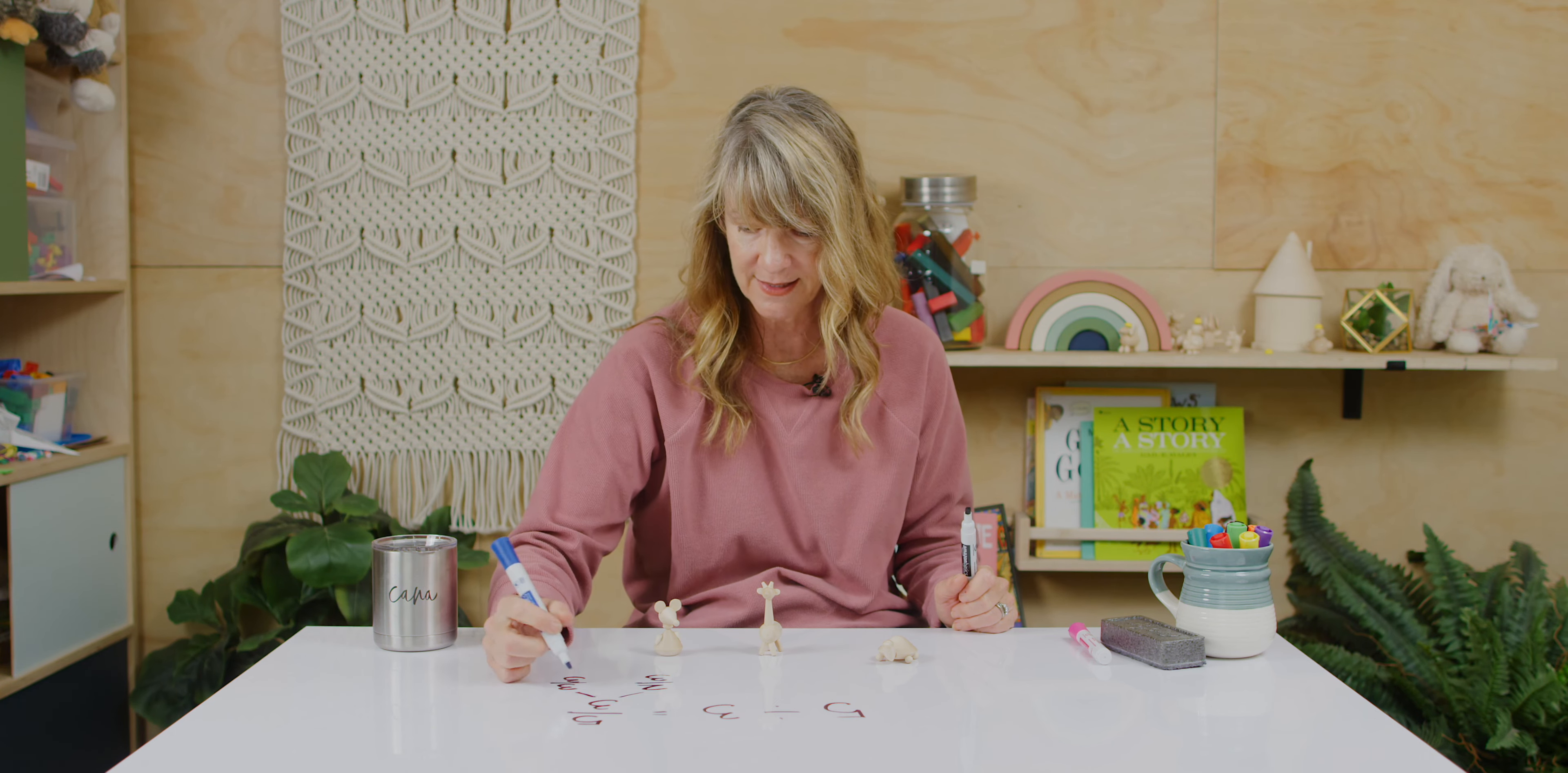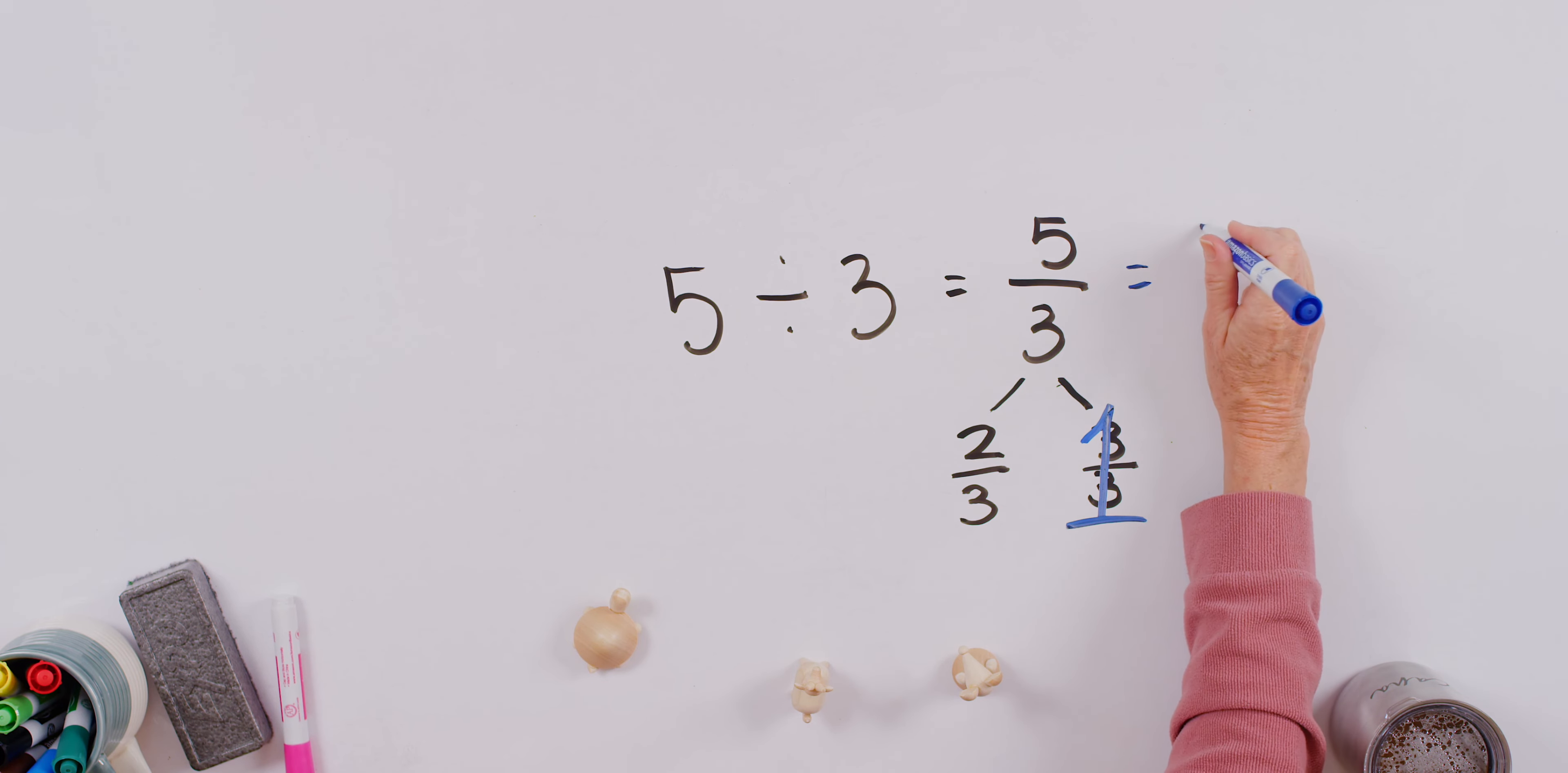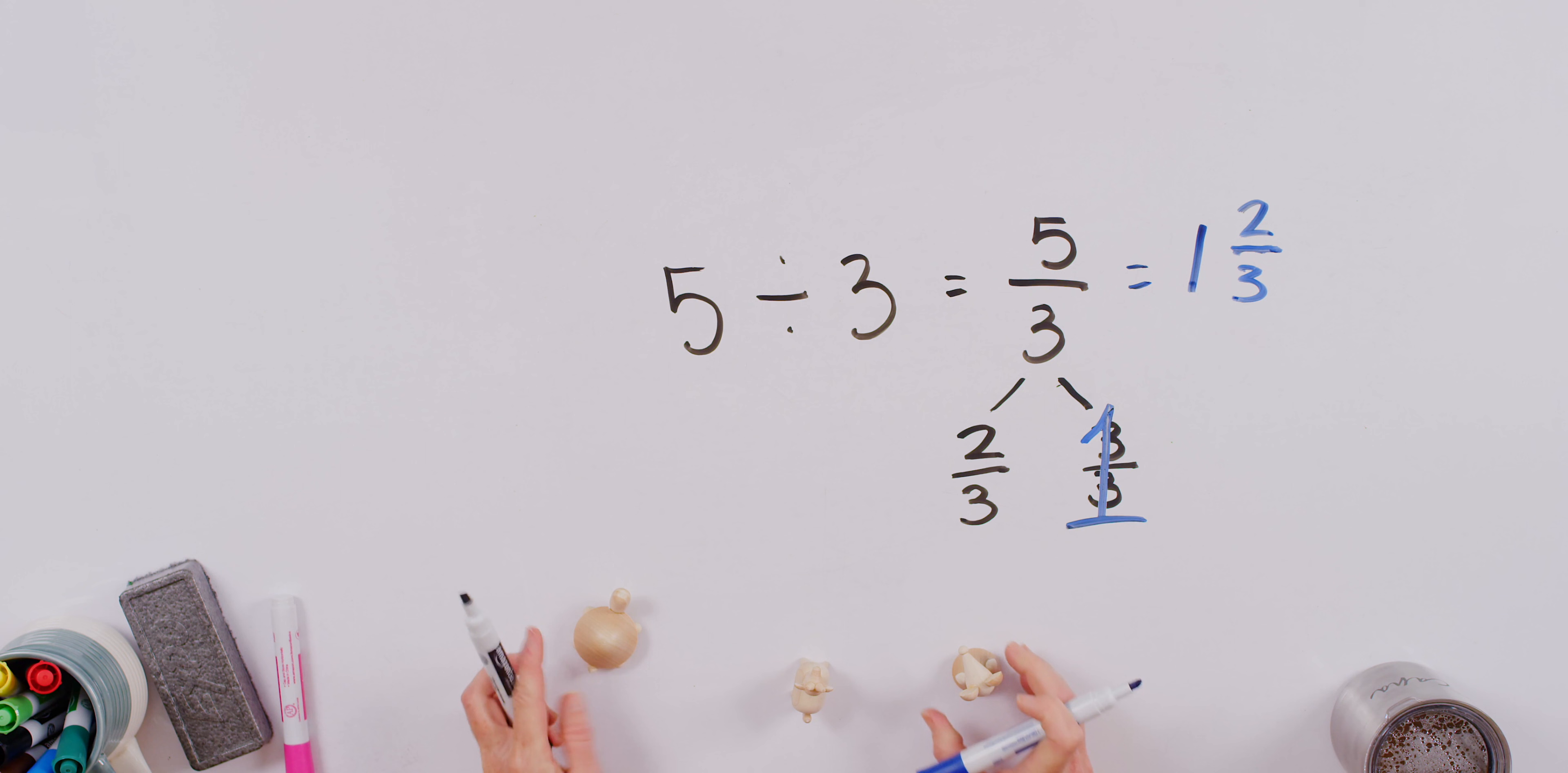All righty, so teachers and students, remember, when I've got a numerator and a denominator that are the same, that is like a secret ninja one. It's like, oh, I can always find, I'm always looking for that one. There it is. Now we can put this together. One and two-thirds. So in this case, every friend gets a whole cake and a little bit more, two-thirds more.